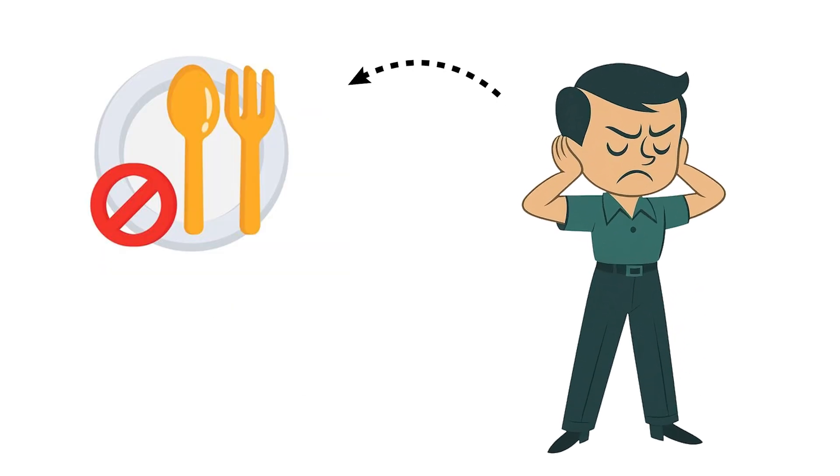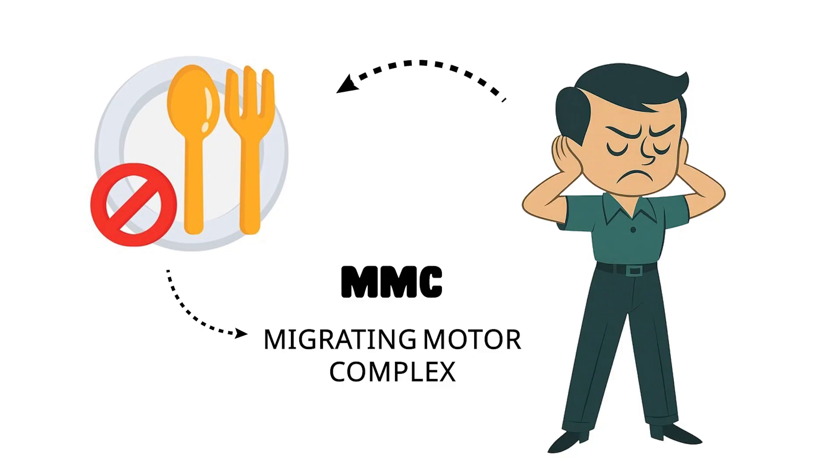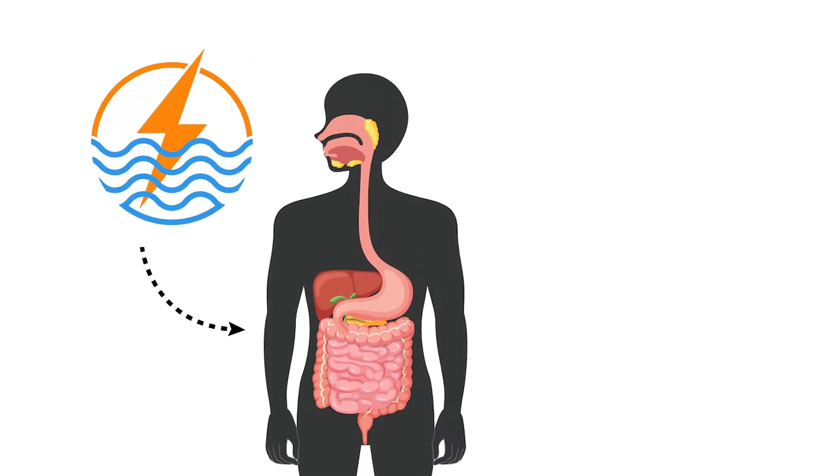One of the most overlooked benefits of fasting is what happens to the migrating motor complex, or MMC. This is a wave of electrical activity that sweeps through the digestive tract every 90 to 120 minutes, but only when the gut is empty. The MMC pushes leftover material, dead cells, and bacteria out of the small intestine and into the colon.